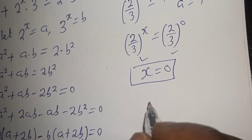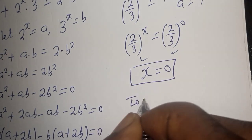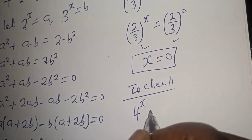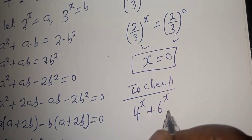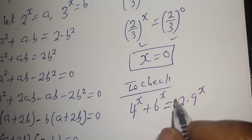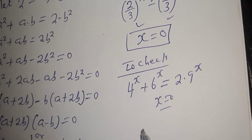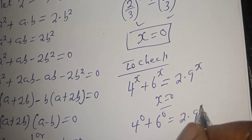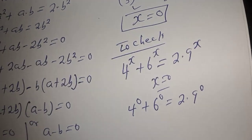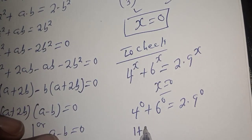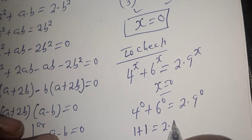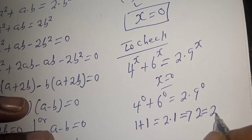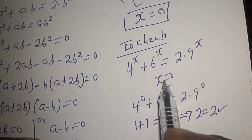Let's check to confirm if our answer is right. We have 4 raised to power s plus 6 raised to power s must equal 2 times 9 raised to power s. When s equals 0: 4 raised to power 0 plus 6 raised to power 0 must equal 2 times 9 raised to power 0, which gives 1 plus 1 equals 2 times 1, so 2 equals 2. We satisfy the given equation at s equals 0.